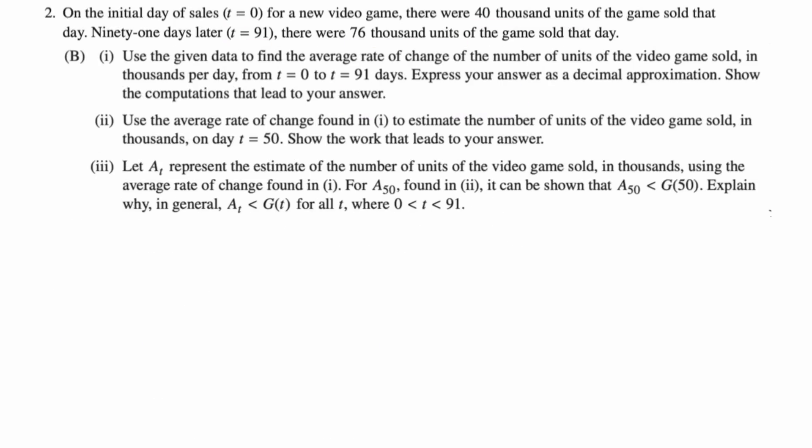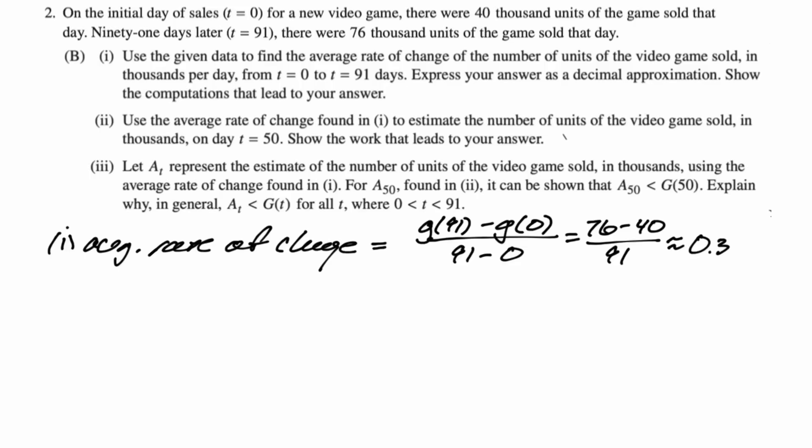For part b, use the given data to find the average rate of change of the number of units of video games sold in thousands per day from 0 to 91. Express your answer as a decimal. Show the computations that lead to your answer. So we're going to find average rate of change. Average rate of change is just algebra and slope. So using those ordered pairs that we had, 76 minus 40 over 91 minus 0. That's a calculation. We need a decimal, so just grab a calculator and do that. And then thousands per day is what we're selling here.